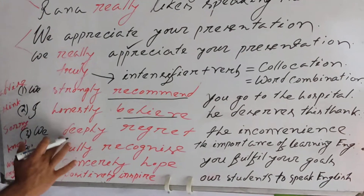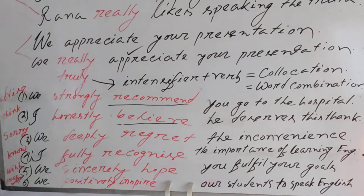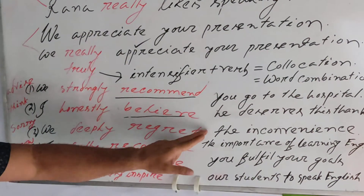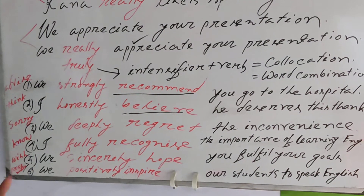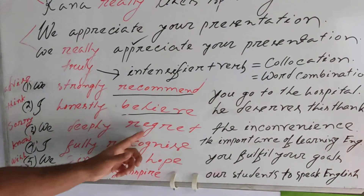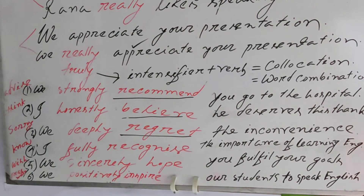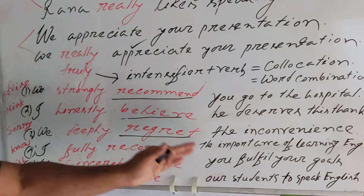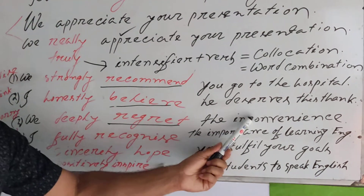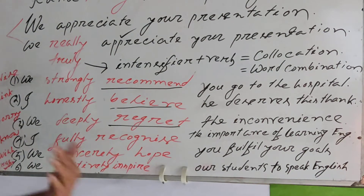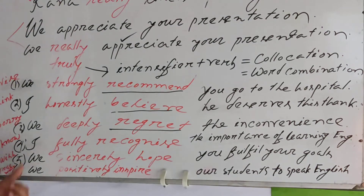The next example shows how to express an apology: 'We deeply regret the inconvenience.' The intensifier is 'deeply' and the principal verb is 'regret.' Note that 'inconvenience' is a negative word — convenience is positive, inconvenience is negative. So: 'We deeply regret the inconvenience.'